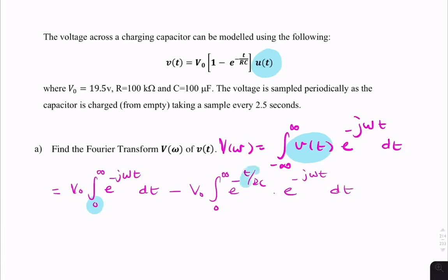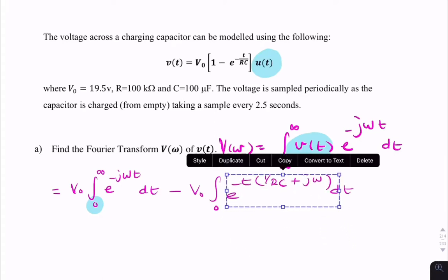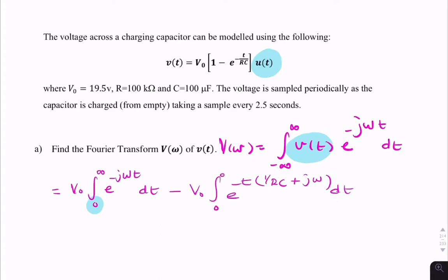E to the minus t over RC times e to the minus j omega t dt. I can combine these two exponentials, and I can replace it with e to the minus t times 1 over RC plus j omega. I'll do that now, just to save space.